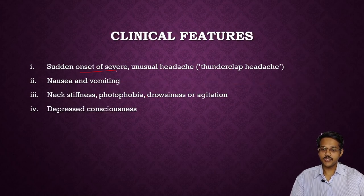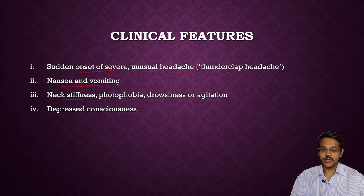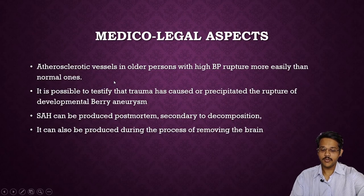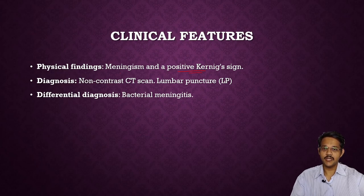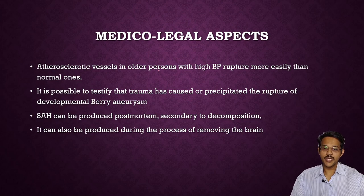Types: immediate subarachnoid hemorrhage occurs within hours; delayed or reactive hemorrhage occurs until initial vessel contraction/retraction is subsided. Clinical features: sudden onset of severe unusual headache — sometimes called thunderclap headache — is the commonest symptom. There may be nausea, vomiting, neck stiffness, photophobia, drowsiness, agitation, and depressed consciousness. Physical findings include meningismus and positive Kernig's sign. Diagnosis is mainly by CT scan; if CT scan is not helpful, lumbar puncture is done. Differential diagnosis includes bacterial meningitis.